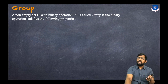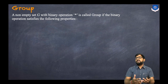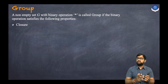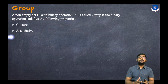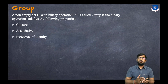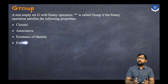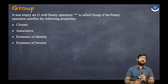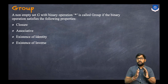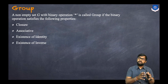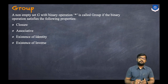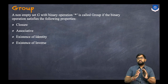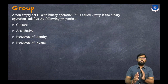The fourth algebraic structure is the group. A non-empty set G with binary operation star is called a group if the binary operation satisfies: closure, associativity, existence of identity, and existence of inverse. These are exactly the four properties of algebraic structures we discussed in the previous session.